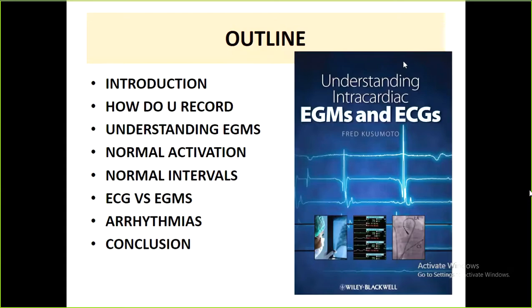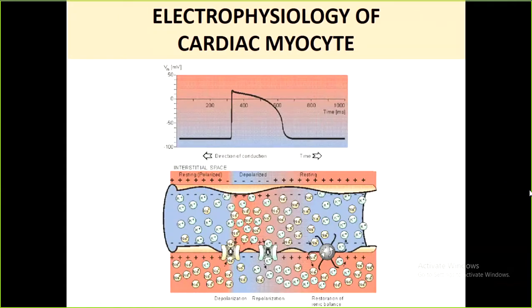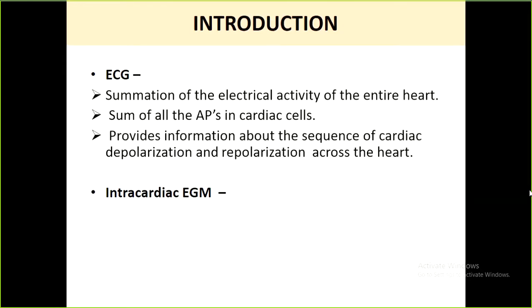Going back to physiology basics: everything we discuss is generated from the cardiac myocyte. The moving in of sodium channels and moving out of potassium channels within the cardiac myocyte leads to depolarization and repolarization waveforms. The direction of transmission of these waveforms generates electrical potentials within the heart. The ECG is nothing but the summation of all electrical activity of the entire heart recorded from the body surface using electrodes — it is the sum of all action potentials from all cardiac myocytes. The summated recording provides information on both cardiac depolarization and repolarization.